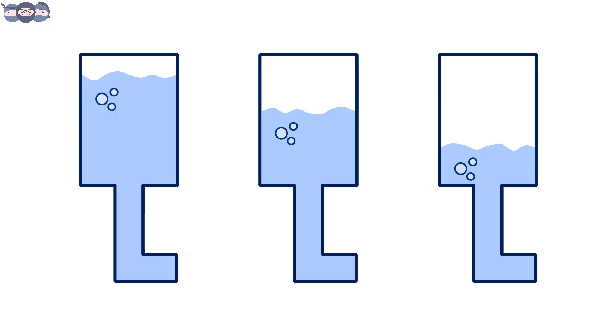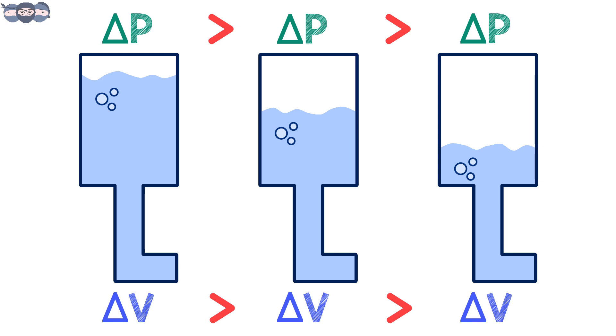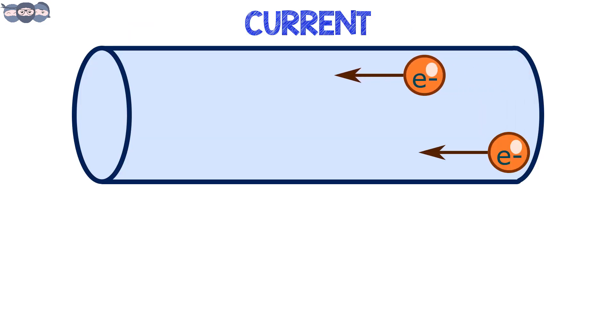From this, we can infer that the more water in the tank, the more the pressure difference. Similarly, we can say that the more the difference in charges, the more the potential difference or the voltage. The next term is current.